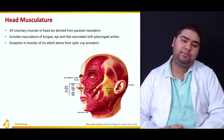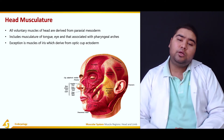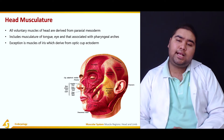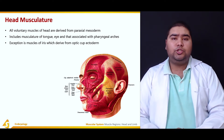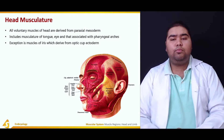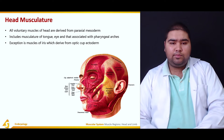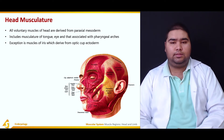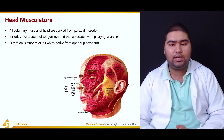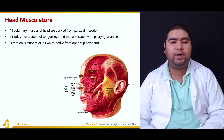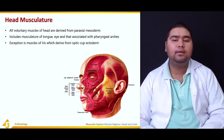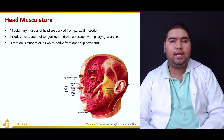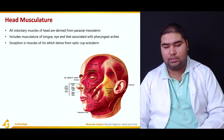An important high-yield point: the muscles of the iris are an exception. They do not originate from the paraxial mesoderm; instead, they originate from the optic cup ectoderm.